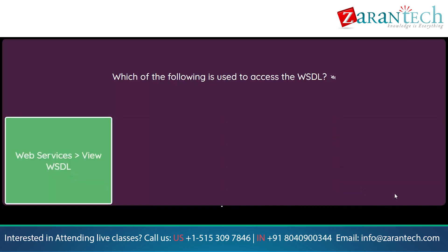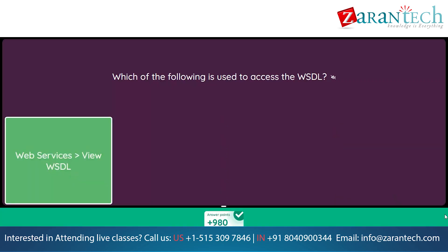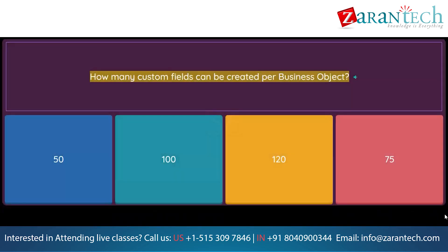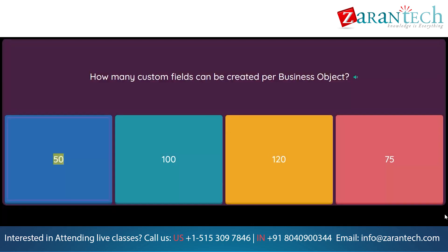How many custom fields can be created per business object? Option 1: 50. Option 2: 100. Option 3: 120. Option 4: 75.